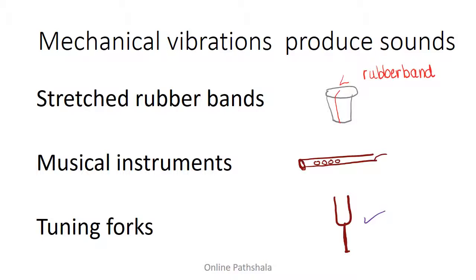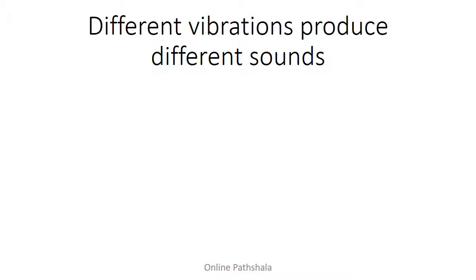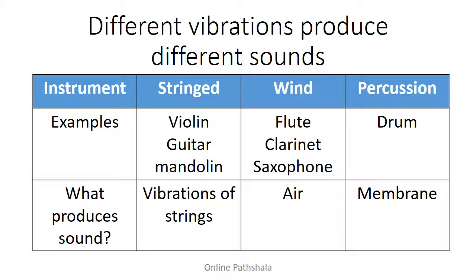It's important to know what part vibrates to create the sound, and a good example to study that is different kinds of musical instruments. Here I have a table looking at three types of instruments, their examples, and what produces sound in each. The first class is stringed instruments — for example, violin, guitar, and mandolin. Sound is produced when the strings on these instruments are vibrated. Again, it is mechanical vibrations that produce sound.